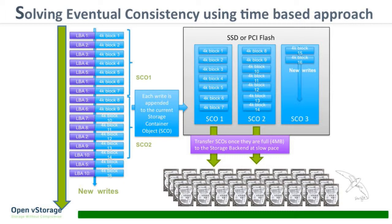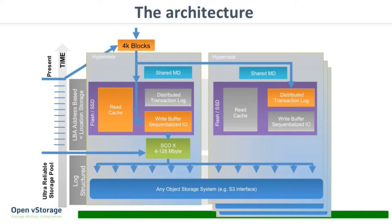We store a write buffer on SSDs, PCI flash, or even RAM, then flush it down to the backend where Swift lives. The 4K blocks go into a write buffer — this even eliminates the VM blender effect. Each volume has its own dedicated resource. Random I/O gets sequentialized, pushed down to the storage container object, and spread out across the object store. We also have a read cache, and when data is written on one host, we copy it to a second host, so if the first goes down, you always have a second copy.